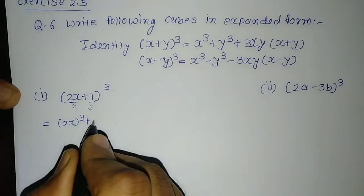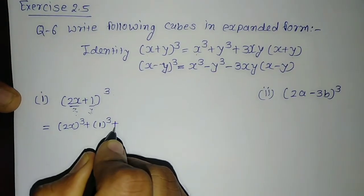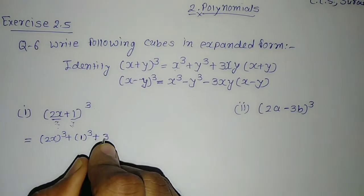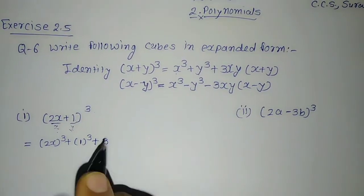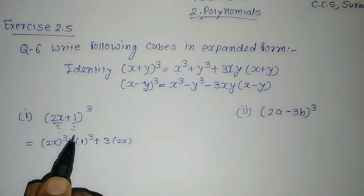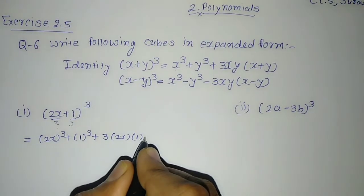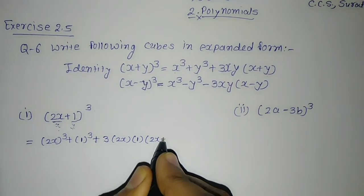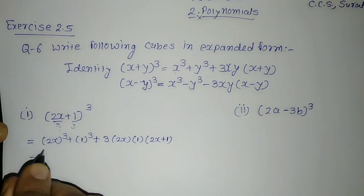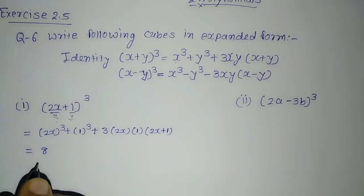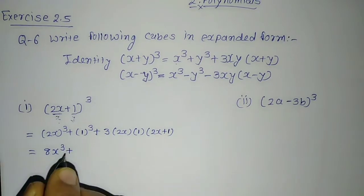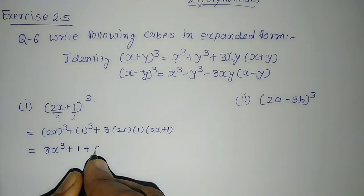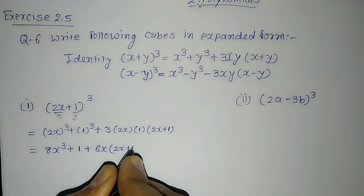Since 2x is considered as x and 1 is considered as y, we write: (2x) cube plus 1 cube plus 3 into 2x into 1 into bracket (2x + 1). Now, 2 cube is equal to 8, so (2x) cube equals 8x cube. And 1 cube equals 1. Then 3 times 2x times 1 gives 6x, so we have 8x cube plus 1 plus 6x times bracket (2x + 1).